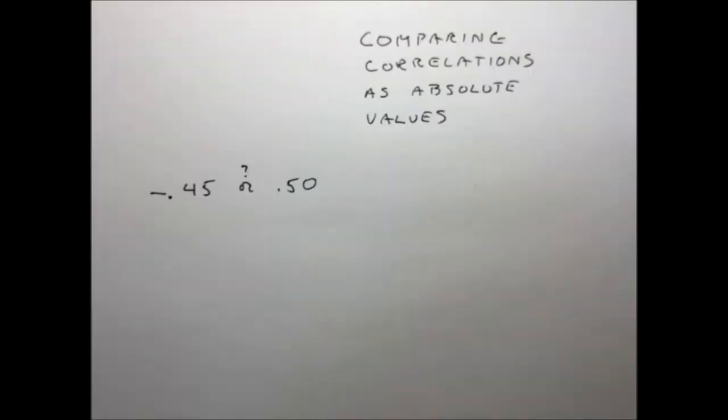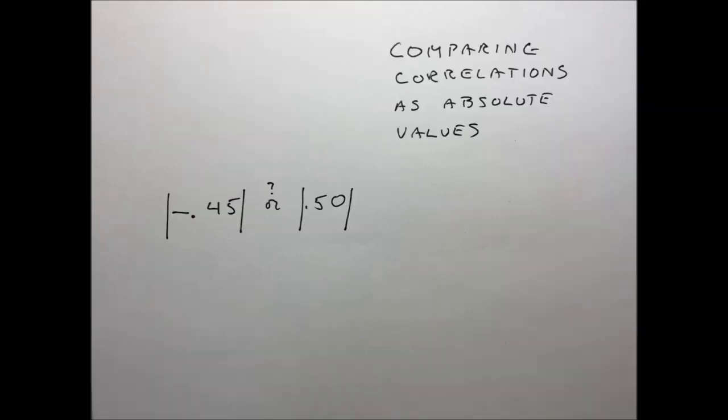Consider a situation where you're asked which is greater. Minus 0.45 or 0.50? From algebra, perhaps you remember that the vertical lines on the sides of both numbers mean that you take the positive value of both numbers and consider them, not the negative.